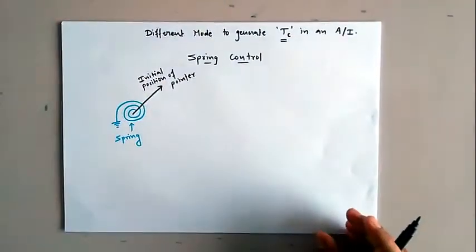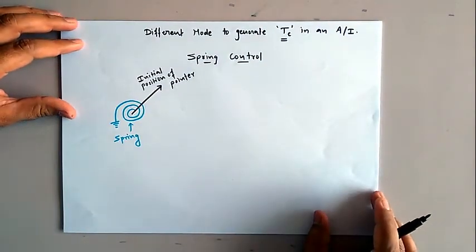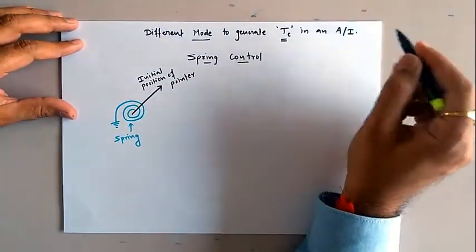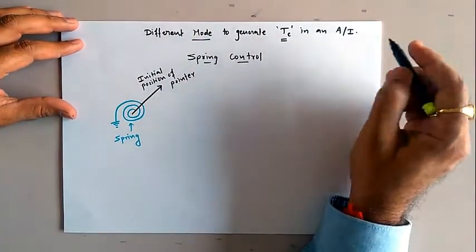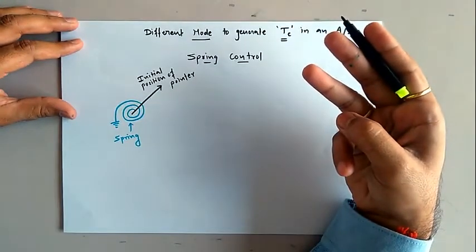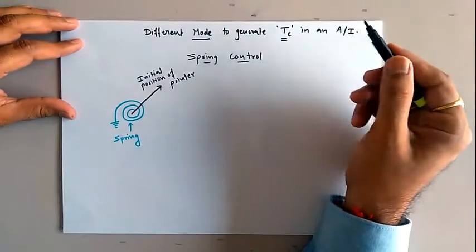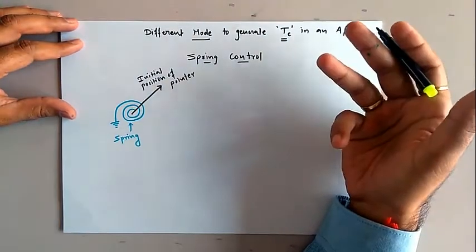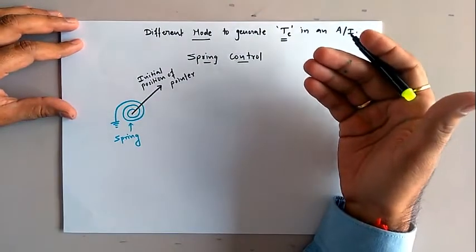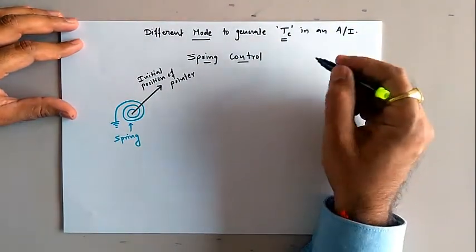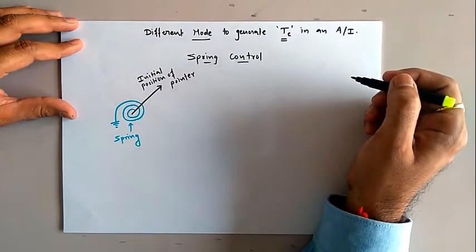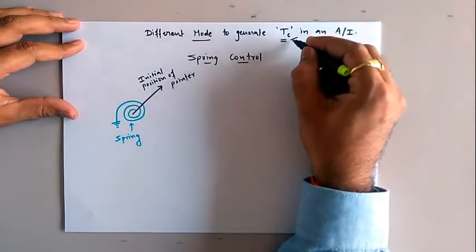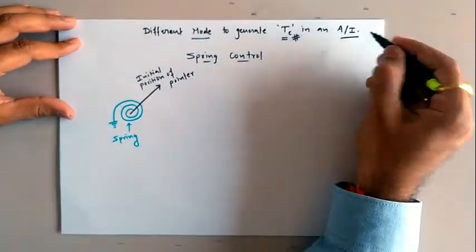In this lecture we will discuss in detail about the different modes to generate controlling torque in an analog instrument. For faithful operation of any analog instrument we require three operating torques: the first is deflection torque, the second is controlling torque, and the third is damping torque. To generate deflection torque we have different phenomena like magnetic effect, electrostatic effect, induction effect, and so on. In this lecture we are trying to identify what are the different types of mechanisms to produce the controlling torque component in any analog instrument.